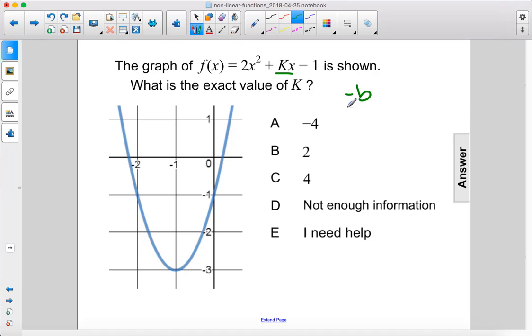So we look at the equation for the axis of symmetry, negative b over 2a. b is also k, so we could say negative k over 2a is also the axis of symmetry.